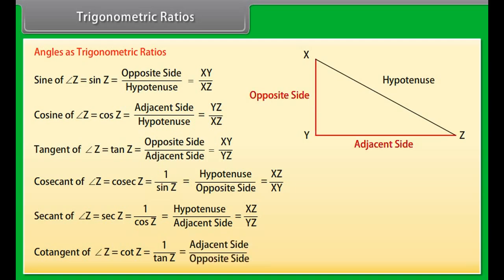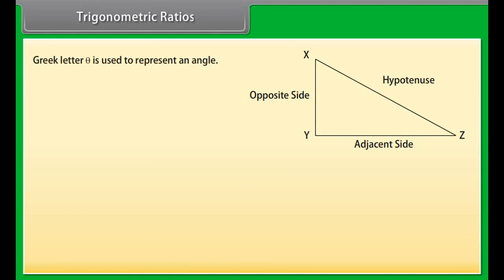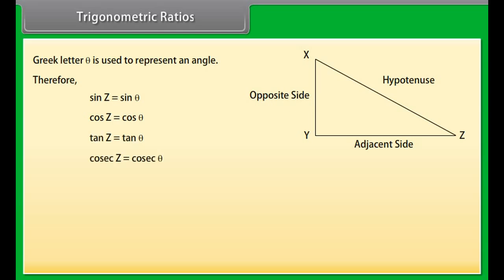The Greek letter theta is used to represent an angle. Therefore, sin Z may be written as sin θ. Similarly, cos Z equals cos θ, tan Z equals tan θ, cosec Z equals cosec θ, sec Z equals sec θ, and cot Z equals cot θ.